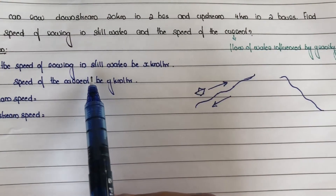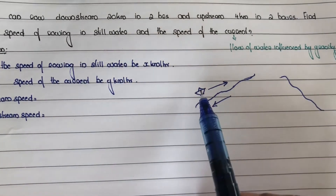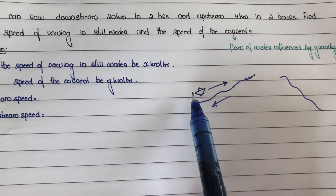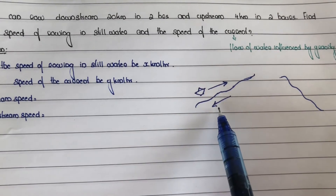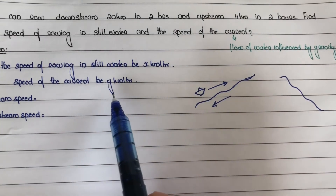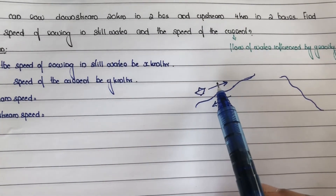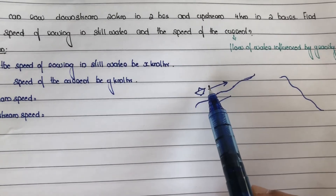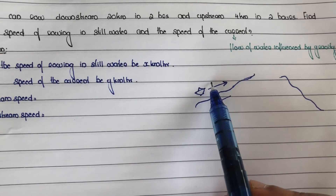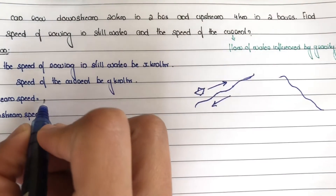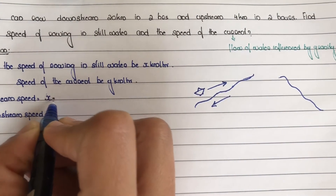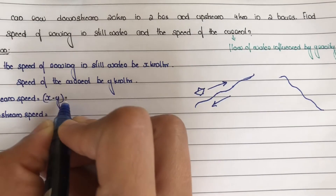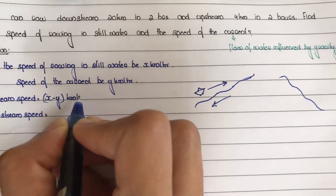We assume speed of rowing in still water is x km per hour, and speed of the current is y km per hour. So the upstream speed is x minus y km per hour.